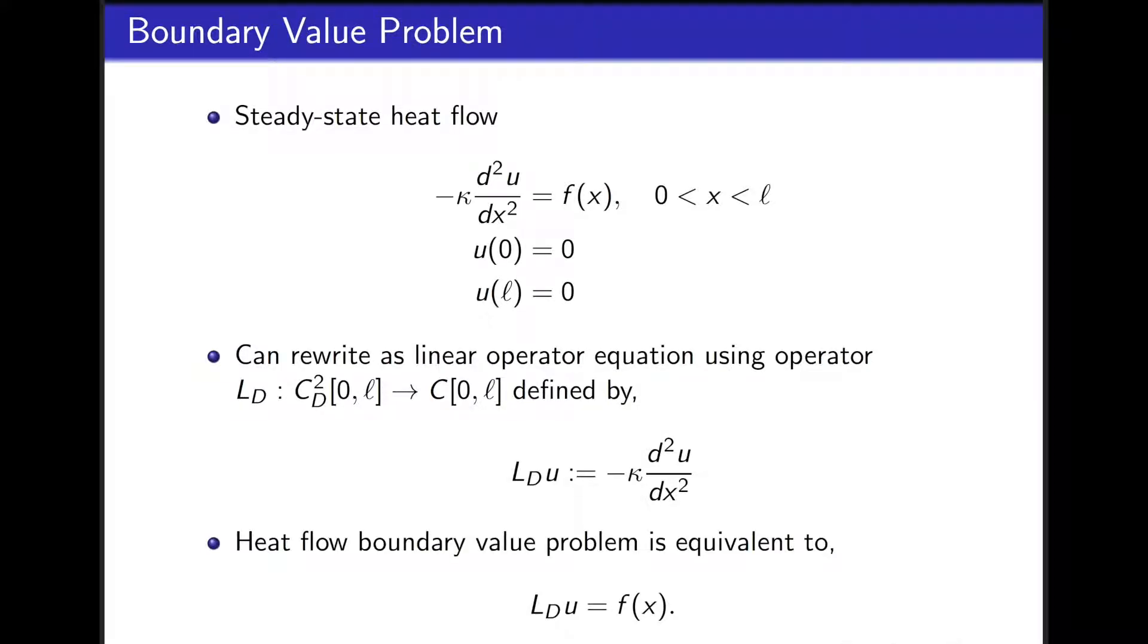Now that we've defined this linear operator acting on the space of functions that already satisfy homogeneous Dirichlet boundary conditions, we can rewrite the heat flow problem as the question, find a function u inside of C^2_D such that L_D acting on u is equal to f for some continuous function f.